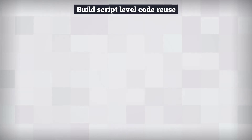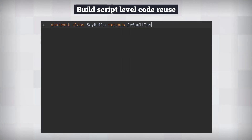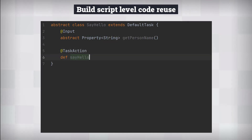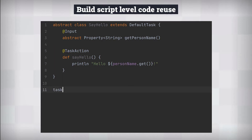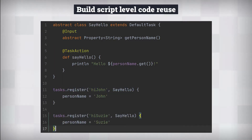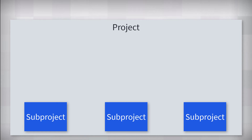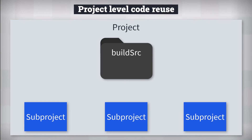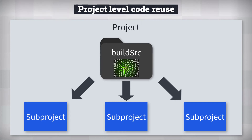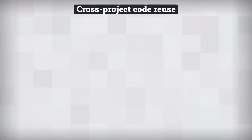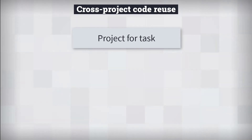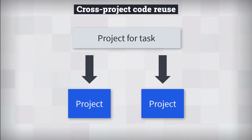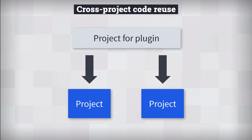In Gradle, the first level of reuse is within the build script itself, where you can define custom methods and classes. For example, you can define a class for a task that prints out a greeting for a specific person, then register multiple tasks referencing this class. For reuse across multiple subprojects, you can extract the class into a special directory called BuildSrc — this is the second level of reuse. Any code in BuildSrc is available in the build.gradle files of other subprojects. The third level is extracting the task into its own project to be published and reused by multiple separate projects — or even turning it into a plugin, which like Maven's plugins, you can easily apply to any project to add certain behavior.